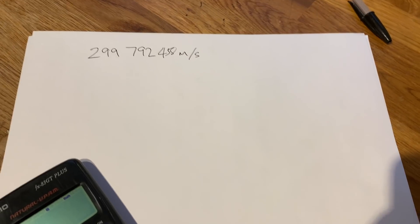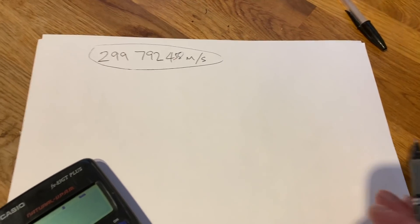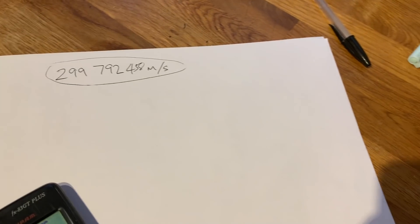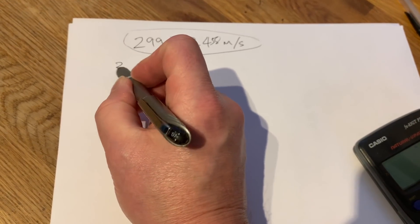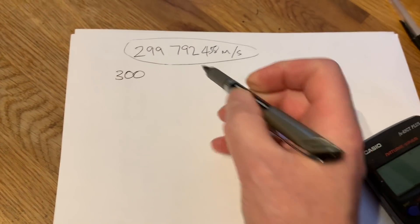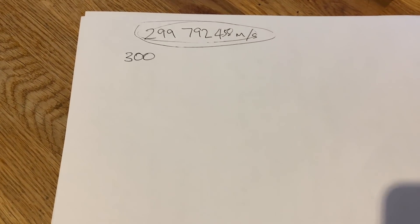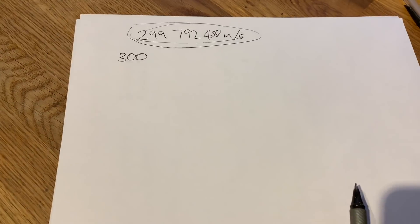So armed with this information, we can now calculate the wavelength of any frequency, and it's done simply by rounding that up to 300, and we'll use a correction factor to bring it back down to this in a moment. But we now have our constant, the constant is 300.